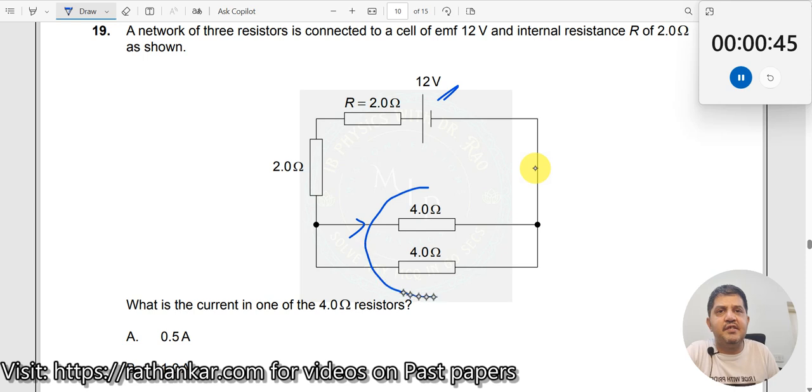So, what you need to do is first simplify this one. What is the effective resistance of this 4 ohms? 1 by R parallel will be equal to 1 by 4 plus 1 by 4 which is equal to 1 by 2 and R parallel is equal to 2 ohms.